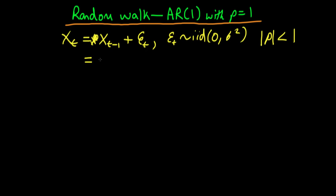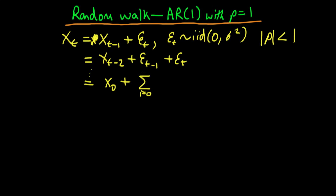If we back-substitute in for Xt, we get that Xt = Xt-2 + Et-1 + Et. If we continue doing this all the way to the first period, we get that Xt = X0 plus the sum from i=0 to t-1 of Et-i. We get this second term by noting that we add on an extra Et term for every extra back-substituted value of X that we go back to.